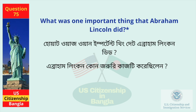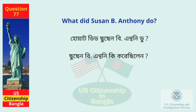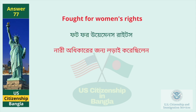What was one important thing that Abraham Lincoln did? Freed the slaves. What did Susan B. Anthony do? Fought for women's rights.